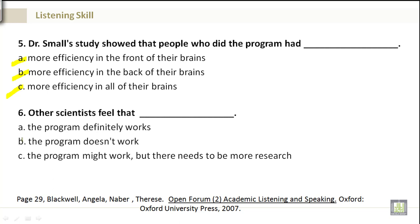Number 6. Other scientists feel that: A. The program definitely works. B. The program doesn't work. Or C. The program might work, but there needs to be more research.